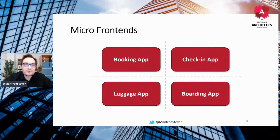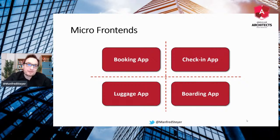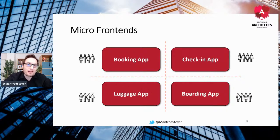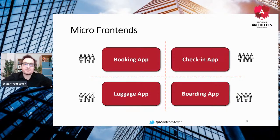We are writing tiny applications instead of big applications to make it possible to assign one agile team to all of them. I've decided to implement a flight solution, which consists of a booking app, a check-in app, a luggage app, and a boarding app. We can assign one team to each of those applications. As those teams are small, they can work with agile techniques and deliver business value on a regular basis. This means we are bringing back agility, even with a huge number of people working on the overall system.